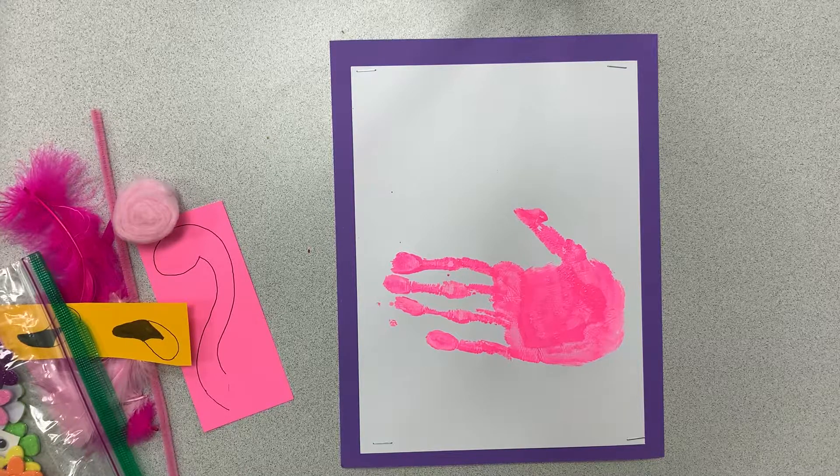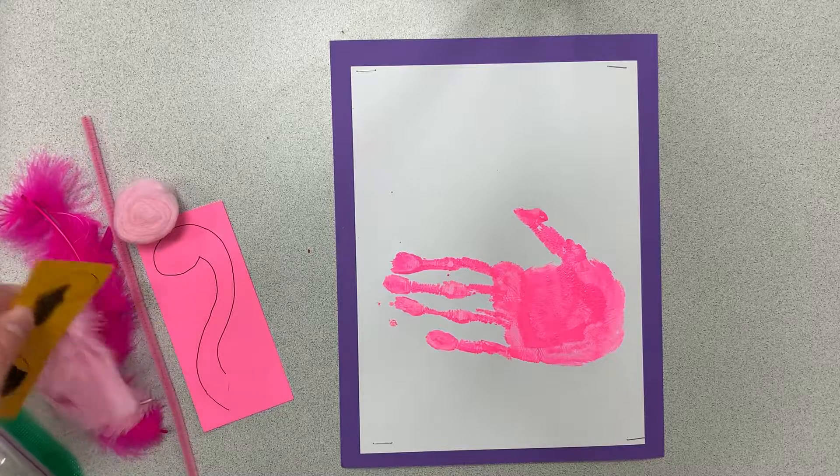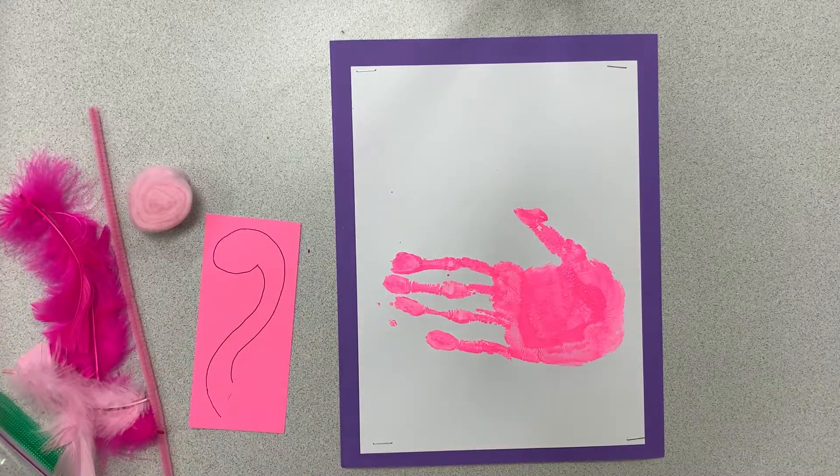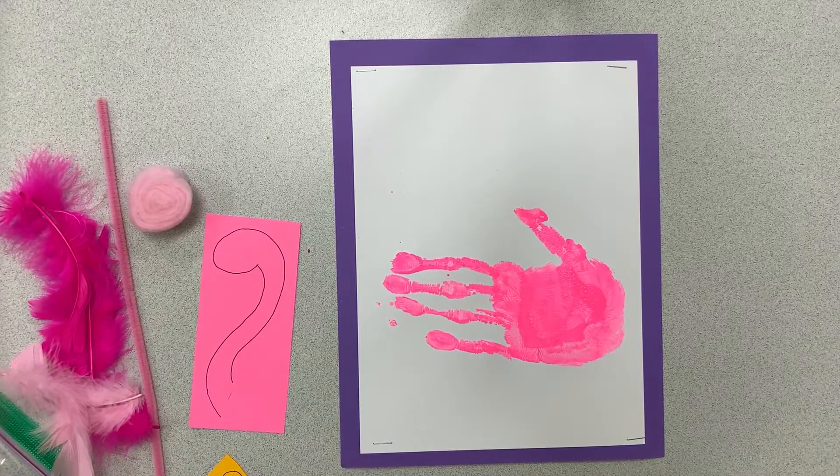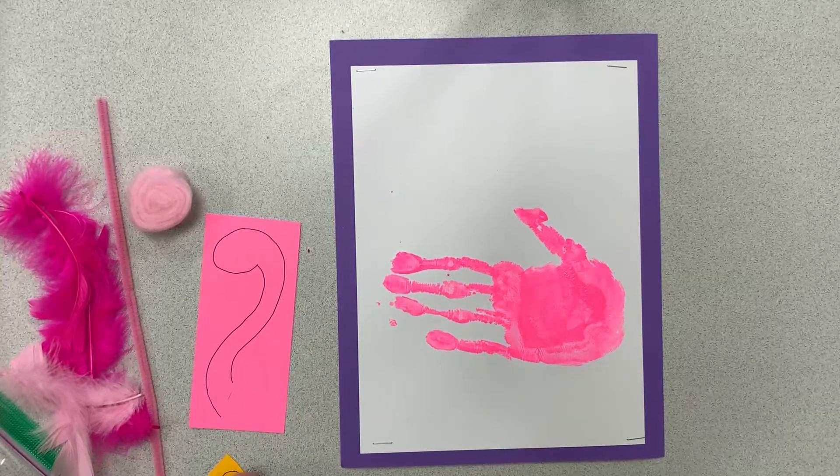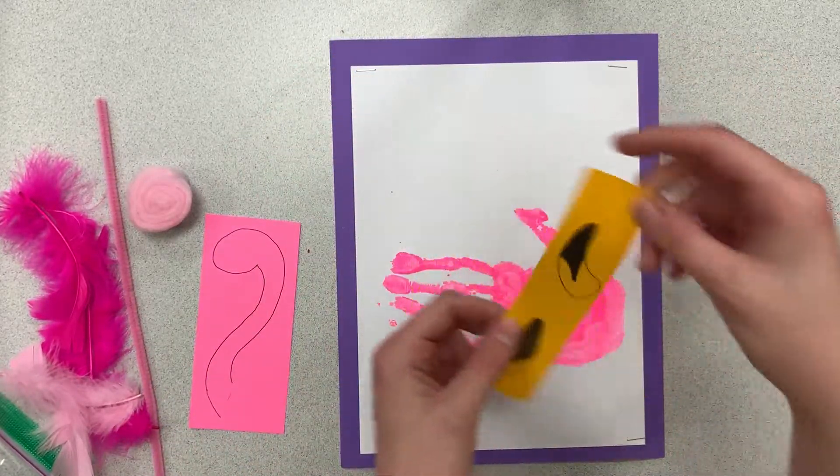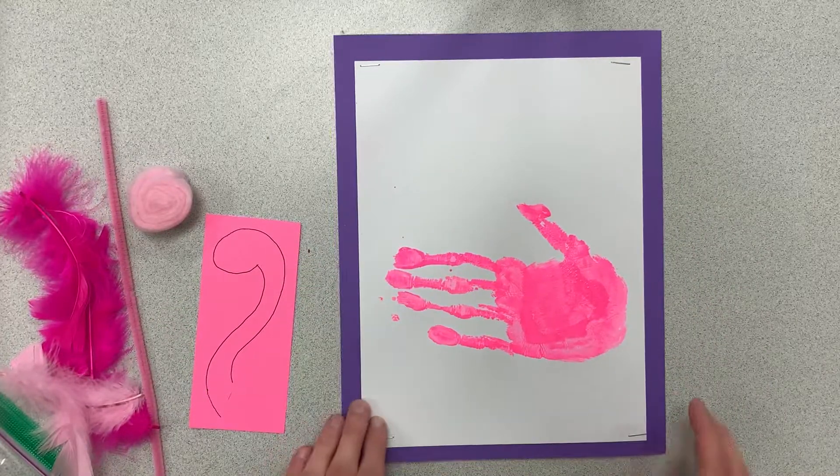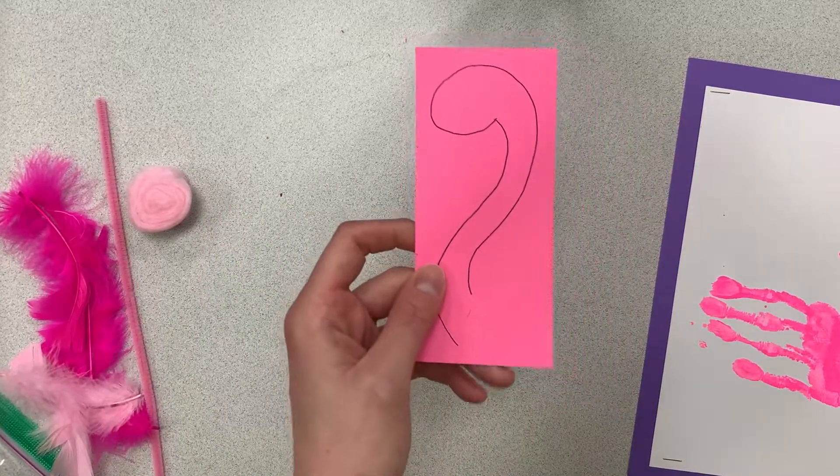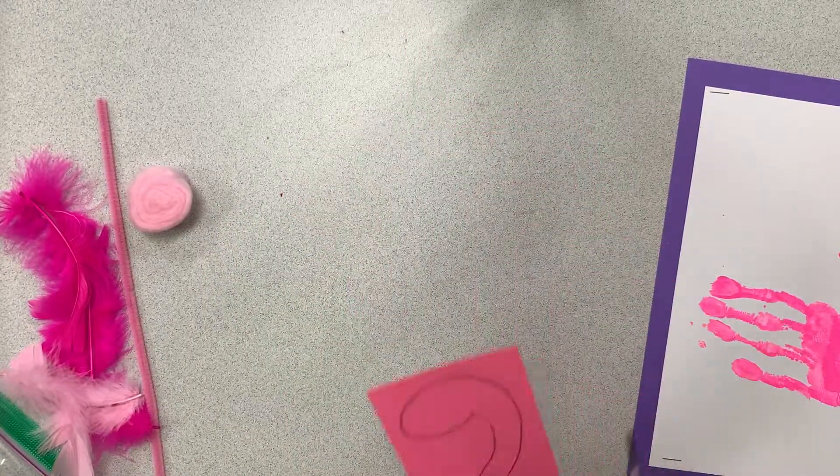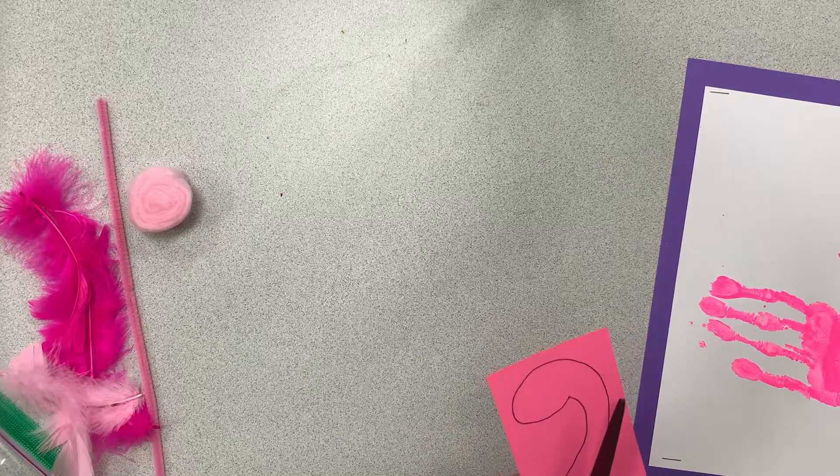So, the next thing we're going to do while this paint is kind of drying is we are going to cut out our beak and our neck and head. So, let's do that real quick. I know these shapes look a little funny and I've given you two different beaks because it depends on which way you put your hand. So, move that aside and let's cut out our head and neck first. It can go either way and then we'll cut out our beak and then we're going to glue those on the paper.